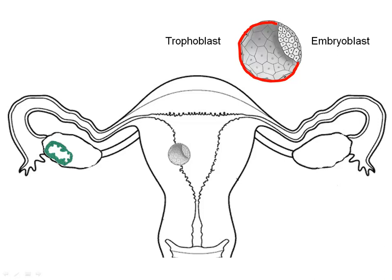The trophoblast secretes the hormone human chorionic gonadotropin into the mother's circulatory system, which targets the ovary, preventing the corpus luteum from disintegrating on day 14, but allowing it to secrete progesterone for about 10 more weeks.